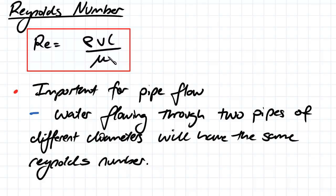So a way we could use Reynolds number is if we had two pipes that had different diameters, those pipes would have the same Reynolds number.